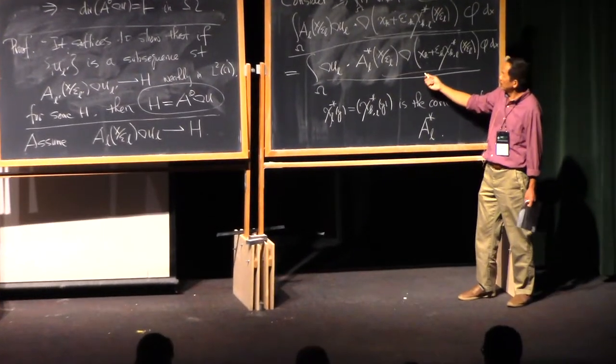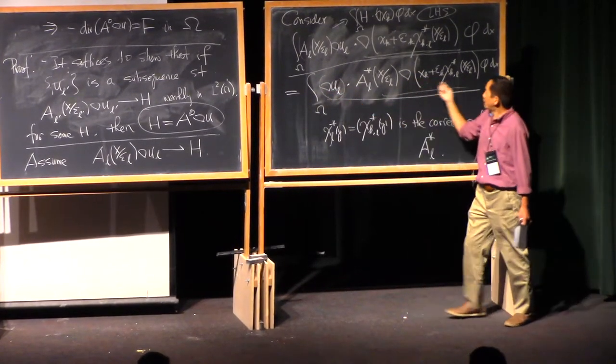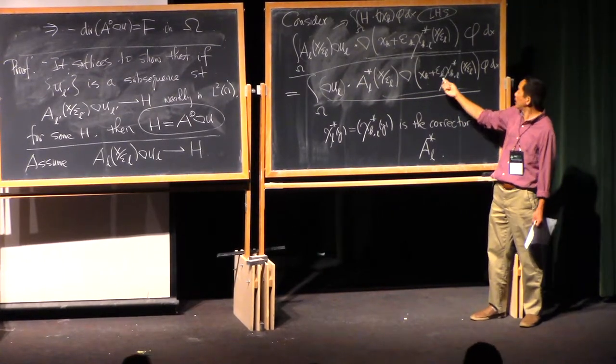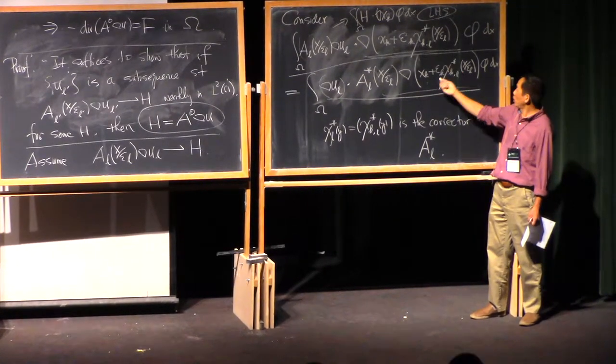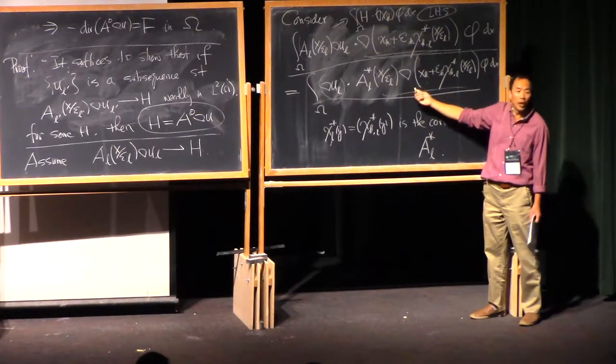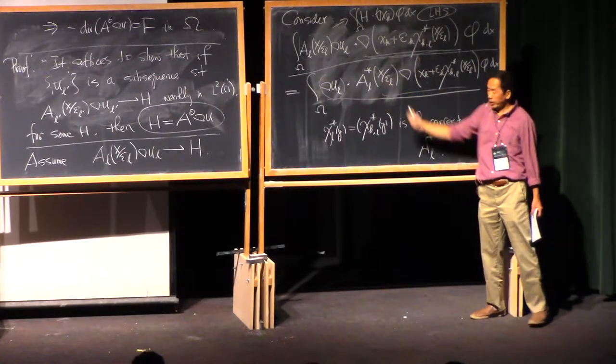Sorry. The curve of this gradient is zero. And the divergence of this term is zero because this chi star is the solution of that equation. For A star. Okay?